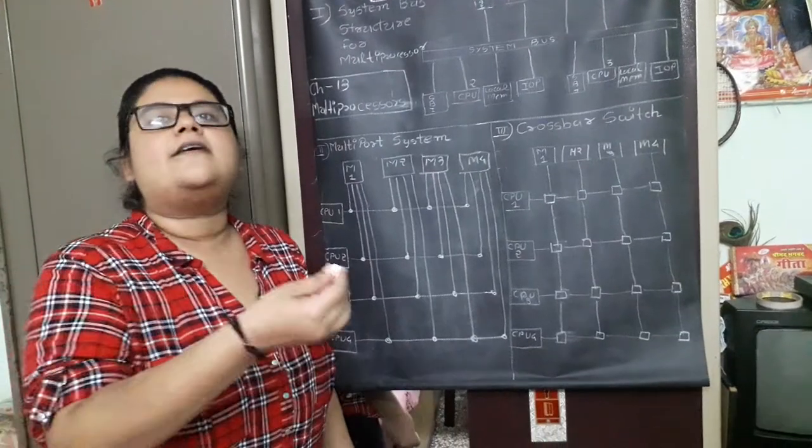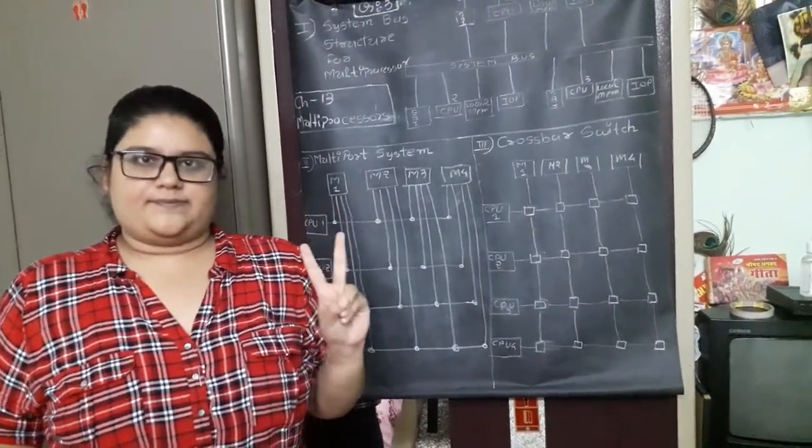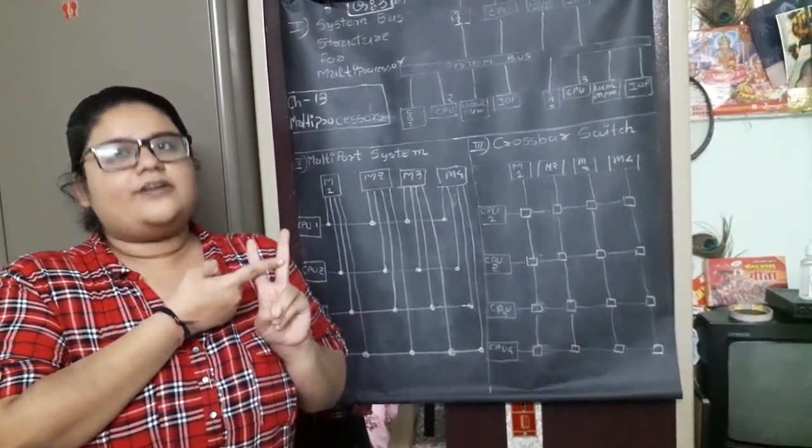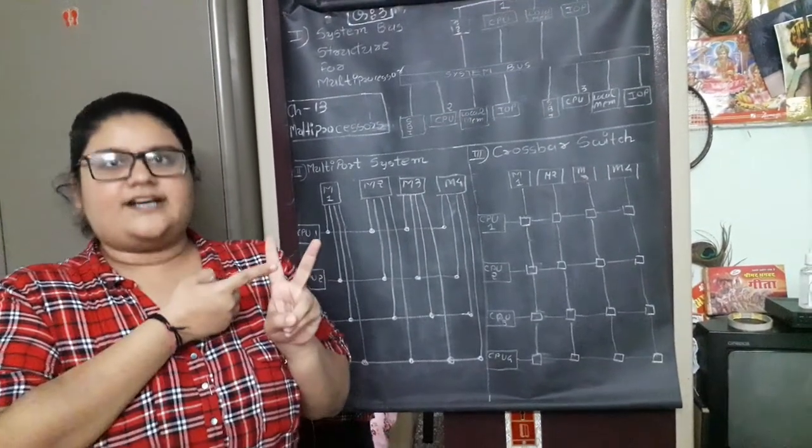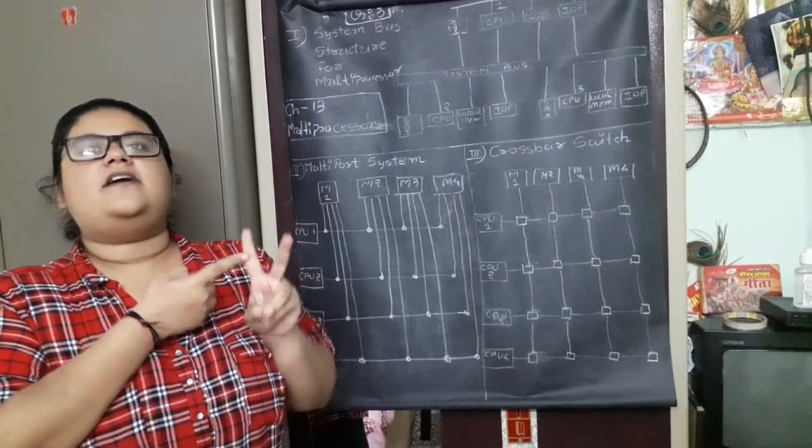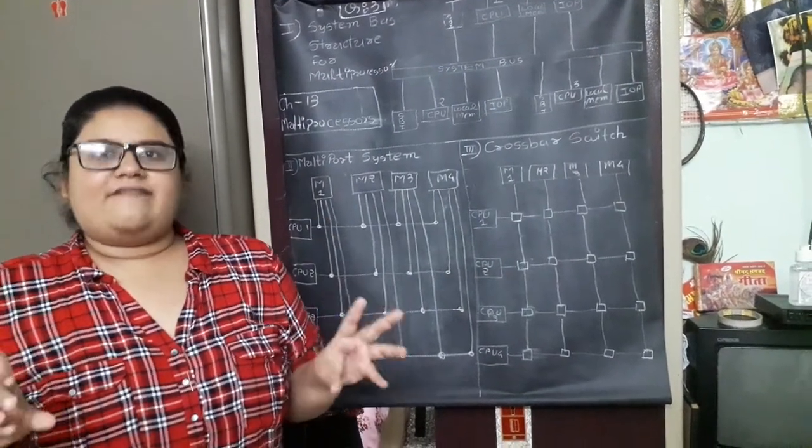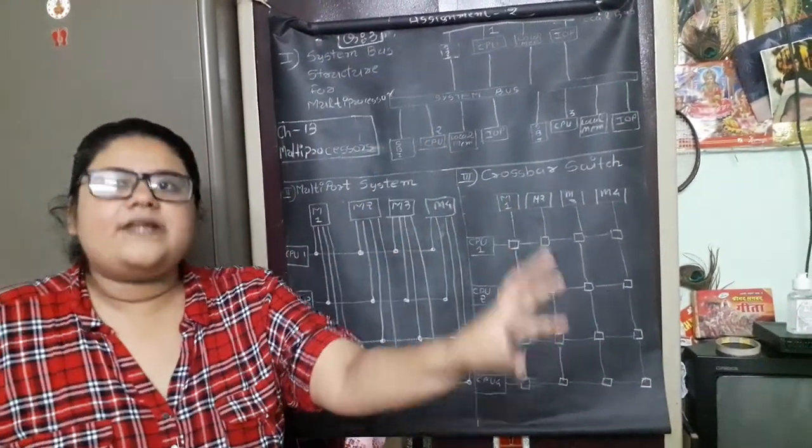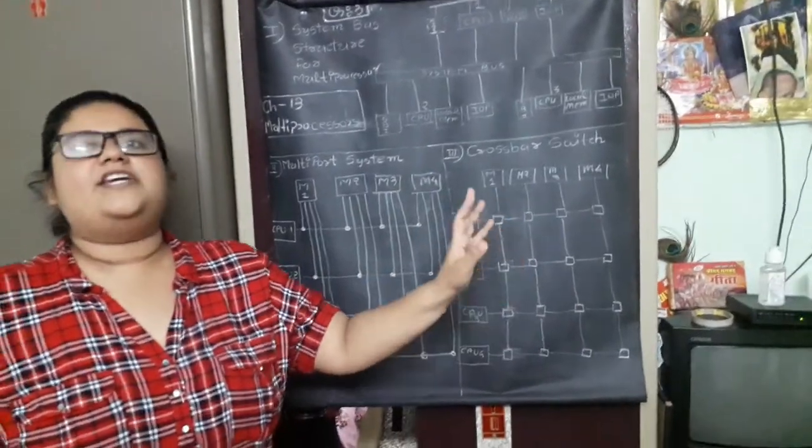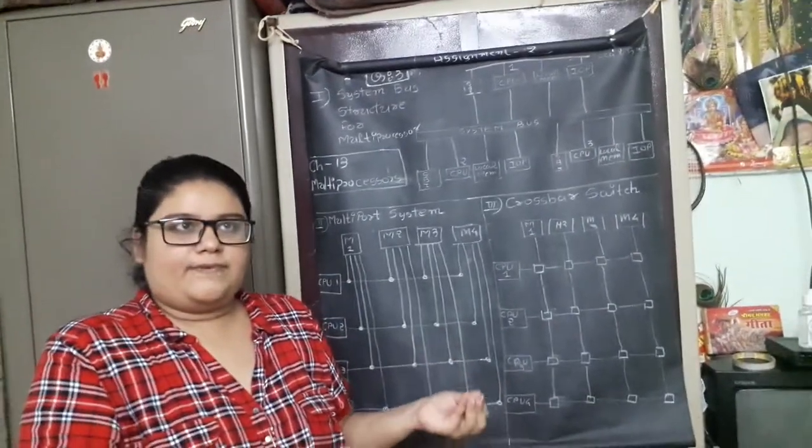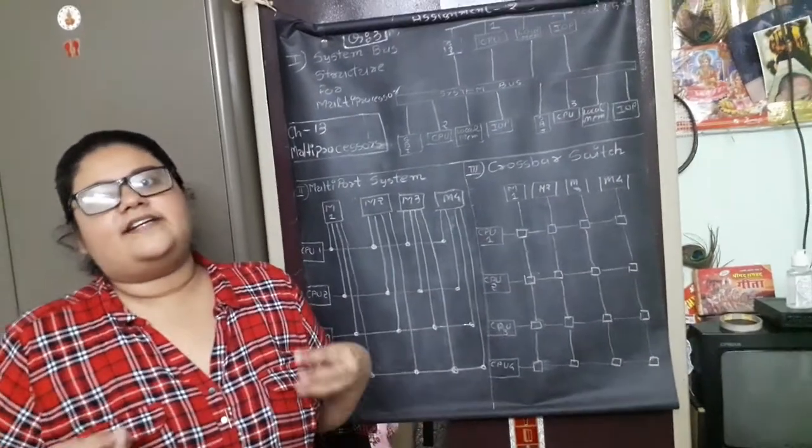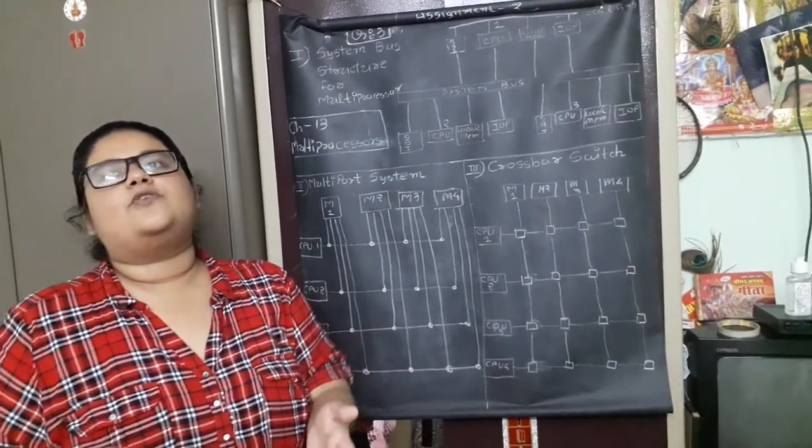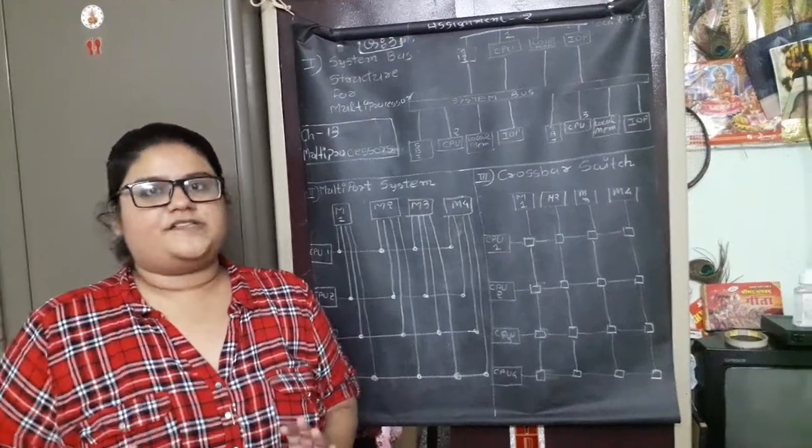There are two major concepts. Either all the processors are tightly coupled or all the processors are loosely coupled. In tightly coupled processor, all the CPUs are there having their internal cache memory, but they all are sharing the common memory unit known as a shared memory unit. Who will access the memory first? Who will share the data first? That determines by the multiple interconnection strategies.